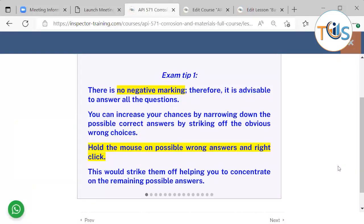Exam tips for API 575 training course. Rule one: there is no negative marking, so answer all the questions. You can increase your chances by narrowing down the possible correct answers. To do so, strike off the wrong possible answers. Hold the mouse on possible wrong answers and right-click. This would strike them off, helping you to concentrate on the remaining possible answers.